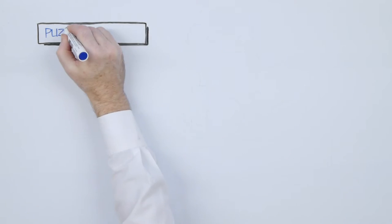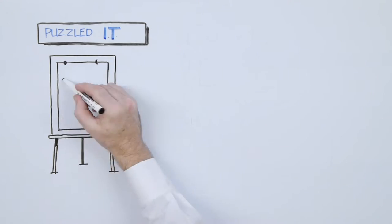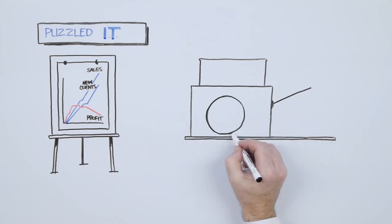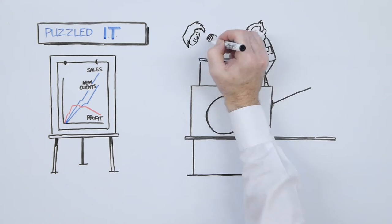Pete from Puzzled IT couldn't work it out. They had twice as many customers, double the number of sales, but just half the profit margin.